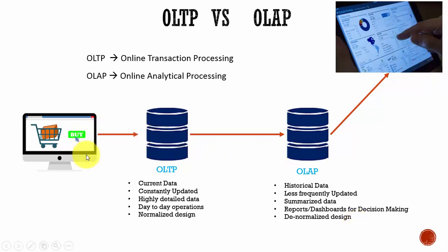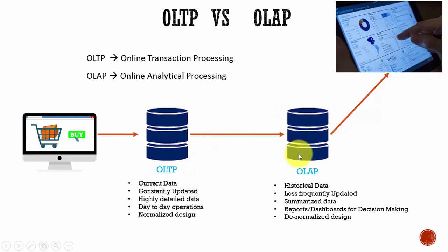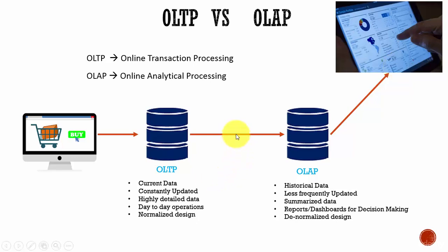Looking at the diagram, various transactions are performed by the user — as they insert, update, and delete, the data is manipulated in the OLTP database. Maybe we maintain the data there for one month, but later we push the data into the OLAP database in a summarized way and store it for a long time, so that this data can be used to generate reports and dashboards for decision making. By understanding the differences between OLTP and OLAP databases, you can make a decision on what type of database to plan for.